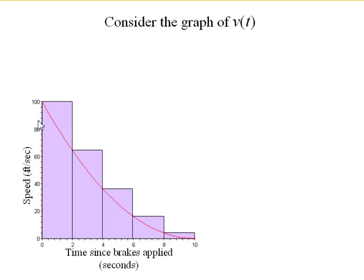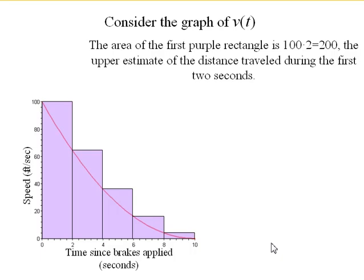Notice that the area of the first rectangle is 100 times 2, or that 200 feet traveled. The second rectangle is 64 times 2, or the distance traveled during the second 2 seconds. So what we're finding is the area of these purple rectangles represents what we found.